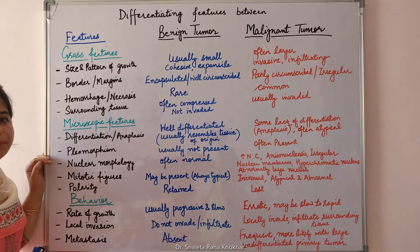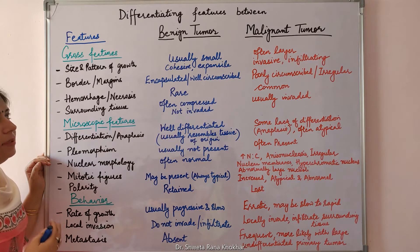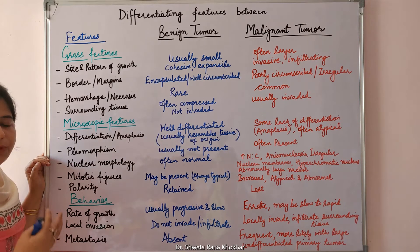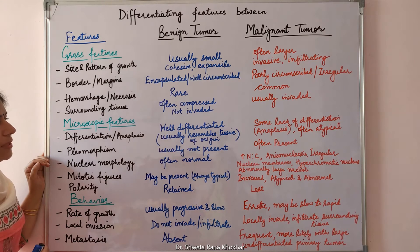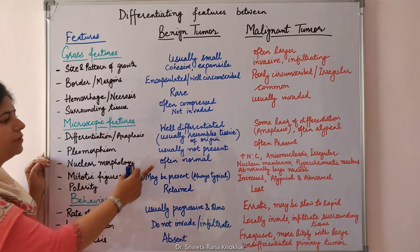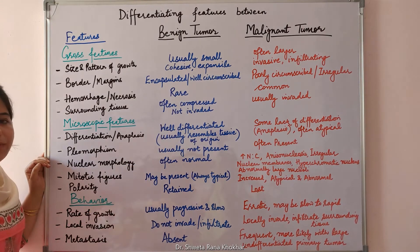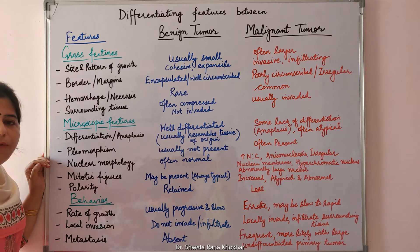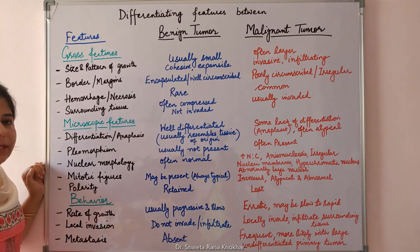Pleomorphism is not seen in benign tumors. Pleomorphism is variation in the shape and size of the tumor cells. Whereas pleomorphism is often present in malignant tumors.